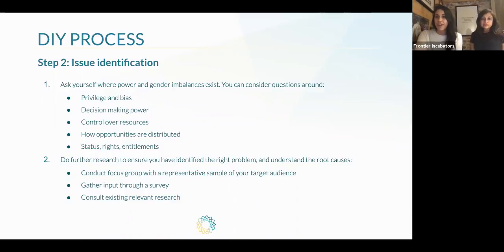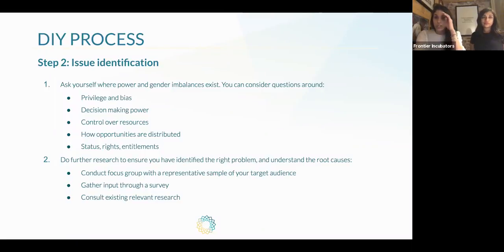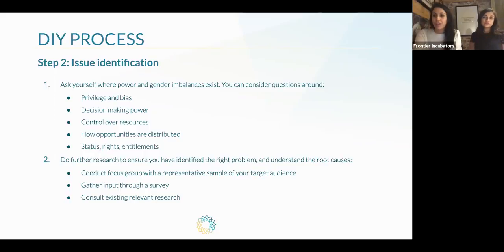The second step is to identify issues around gender and power within your work. You want to ask yourself where power and gender imbalances exist, and consider questions around privilege and bias, decision-making power, control over resources, how opportunities are currently being distributed, and what are the status rights and entitlements within your work. Once you've identified certain issues you want to deal with, do further research to make sure the issue you've identified is actually an issue and that you really understand its cause. You can do this by talking to the affected audience through a focus group, gathering information through a survey, or consulting existing research on the topic.